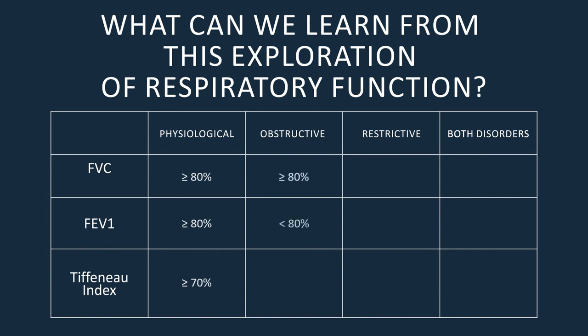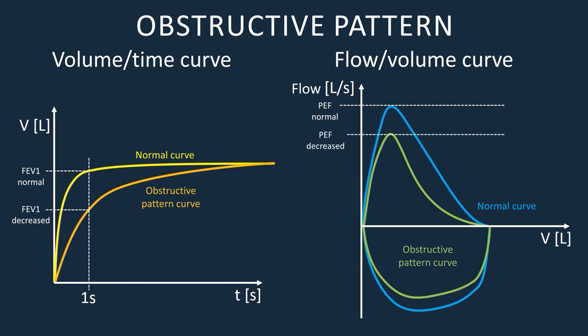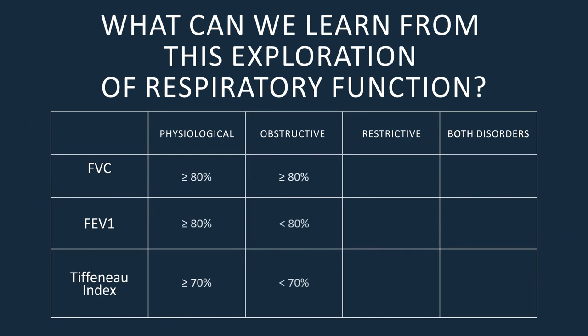This graph shows the volume-time and flow-volume curves of an obstructive disorder and the parameters that are decreased. In the pure restrictive disorder, the vital capacity decreases, so the less air that enters the less air will leave in the first second.